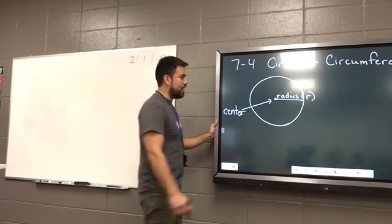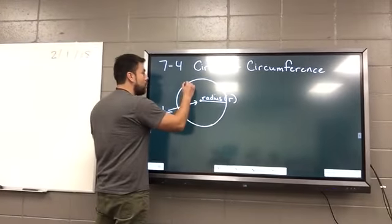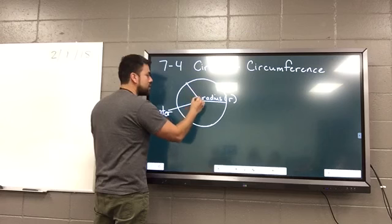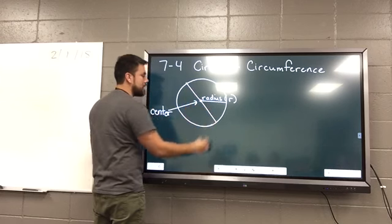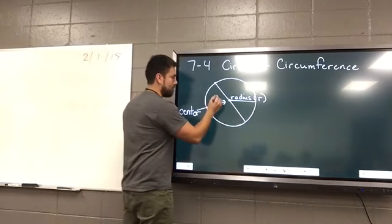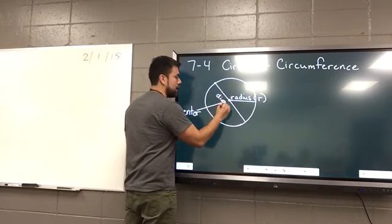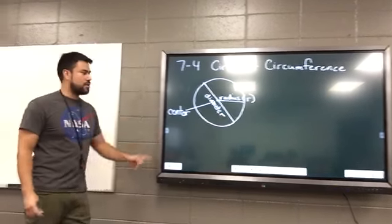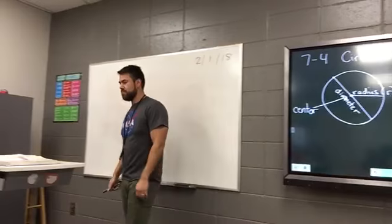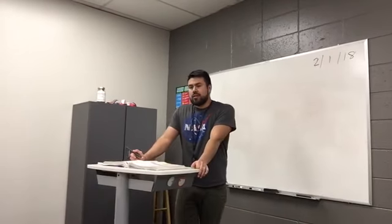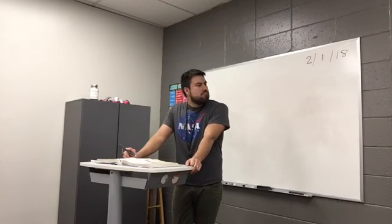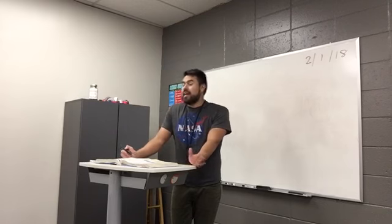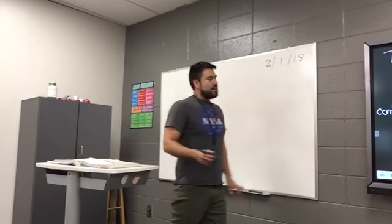There's another thing you need to know. It's the distance from one point on a circle to another point on the circle that crosses through the center. Does anyone know what that's called? Yes. Diameter. Good. How many diameters are there in a circle? Infinite.